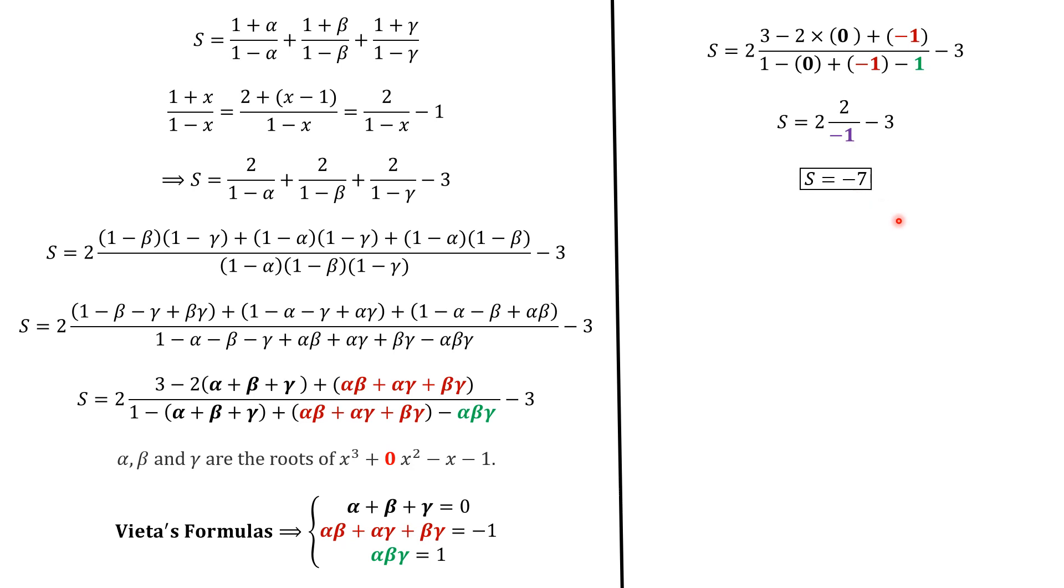But I'm going to show you an even faster way to compute the denominator. Actually, we got that the denominator is minus 1. But given that alpha, beta, and gamma are the roots of this polynomial, we can factor as this. With X equals 1, we have 1 minus 1 minus 1, which is minus 1, equals 1 minus alpha, 1 minus beta, 1 minus gamma. And we have the denominator is minus 1, as we have here. So in both ways, we should find S equals minus 7.